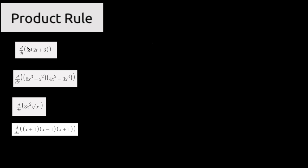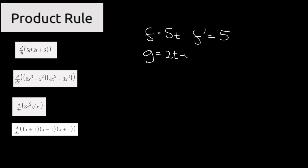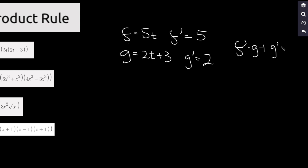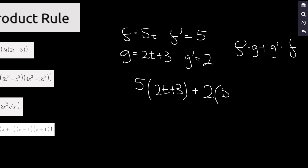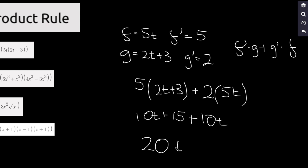For the next one, we have two terms: one term is 5t and the other is 2t plus 3. So f equals 5t, f prime is 5. g equals 2t plus 3, and g prime: 2t becomes 2 and the 3 becomes 0, so g prime is 2. Applying the rule f prime·g plus g prime·f: 5 times (2t plus 3) plus 2 times 5t gives 10t plus 15 plus 10t, and the final solution is 20t plus 15.